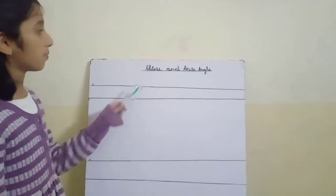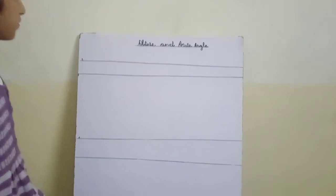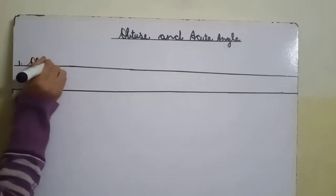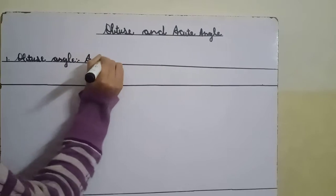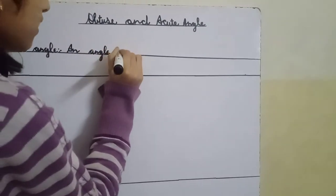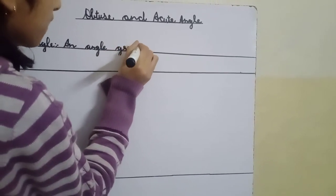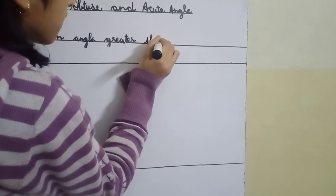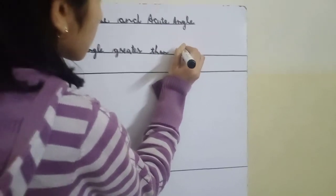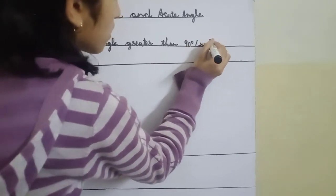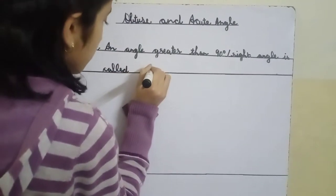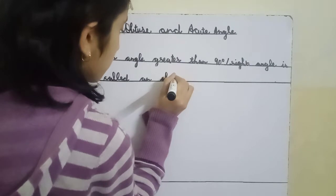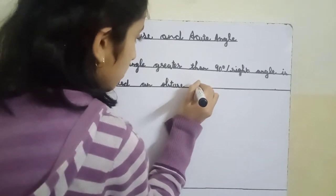Welcome. Today I will tell you about obtuse and acute angles. Our first definition is obtuse angle. An angle greater than 90 degrees is called an obtuse angle.